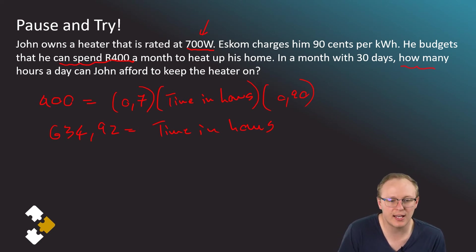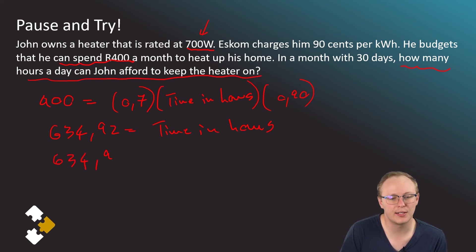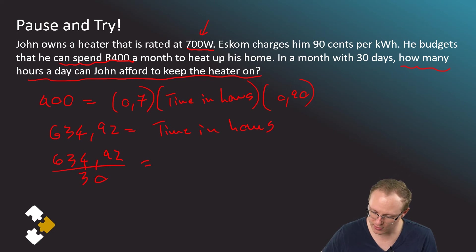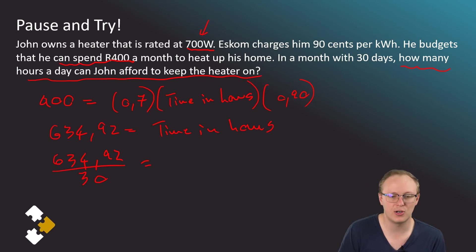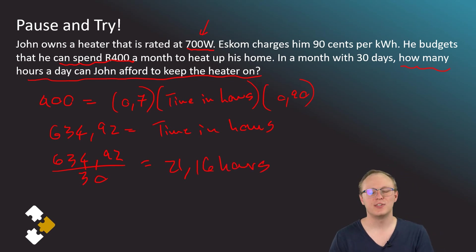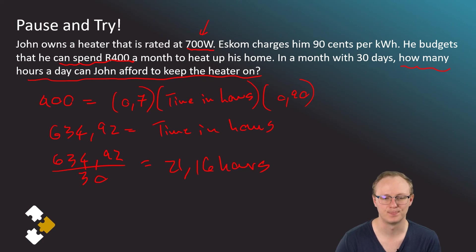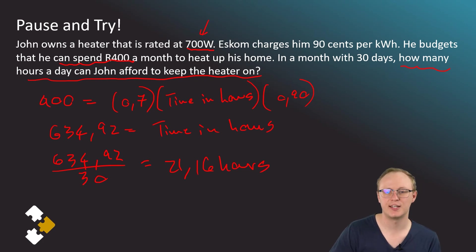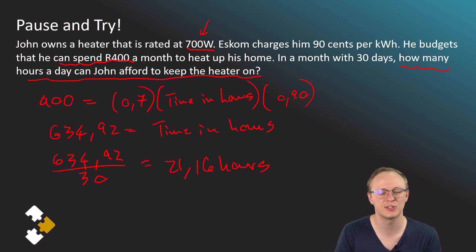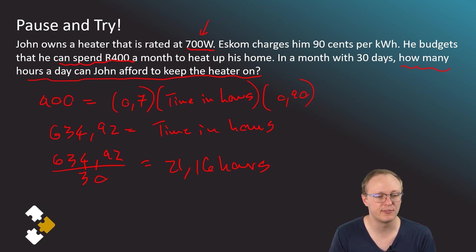To find hours per day, divide 634.92 by 30 days, giving 21.16 hours per day — meaning John can pretty much leave the heater on all the time. Of course, that's because the example uses Eskom charging 90 cents per kilowatt hour and the heater only using 700 watts, but that's the beauty of examples!